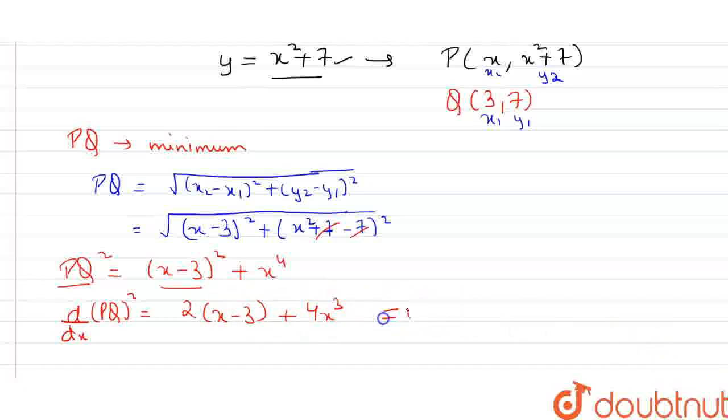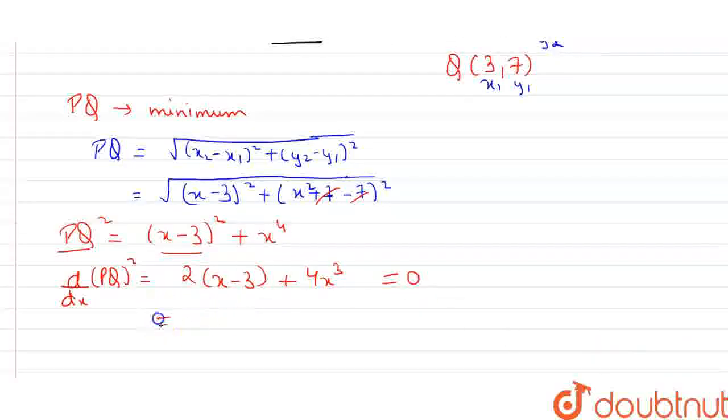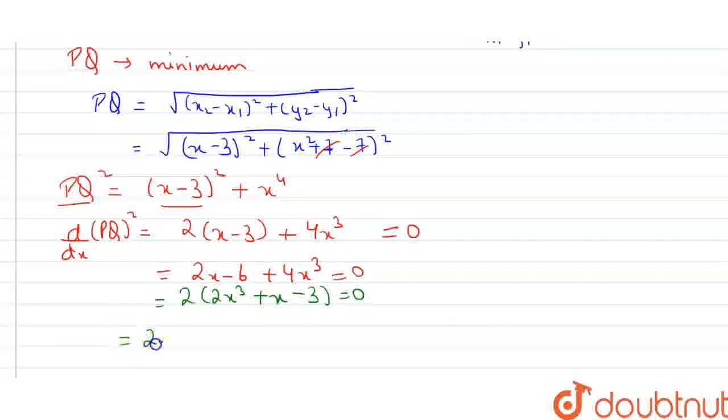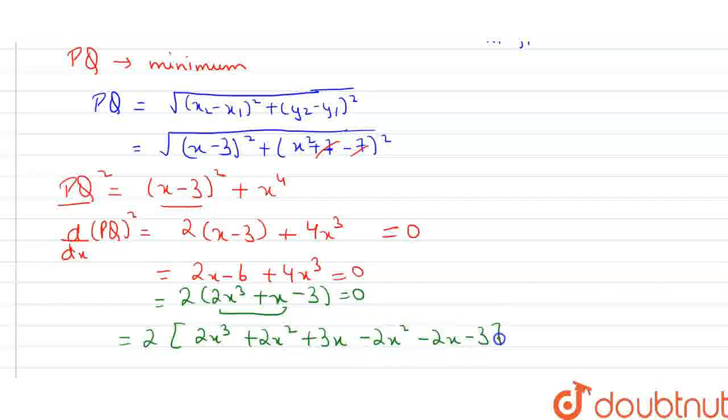Now we have to put this equal to 0 to find the value of x. So it is equal to 2x minus 6 plus 4x cube equals 0. Taking 2 common from all this, it is 2(x cube plus x minus 3) equals 0. Now further solving it, this equation can be written as 2 times [2x cube plus 2x square plus 3x minus 2x square minus 2x minus 3] equals 0.